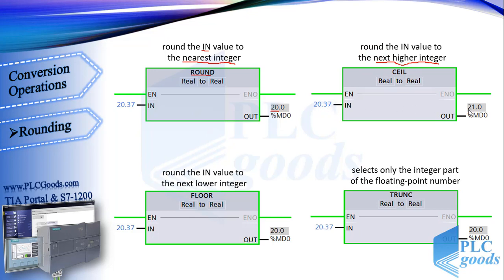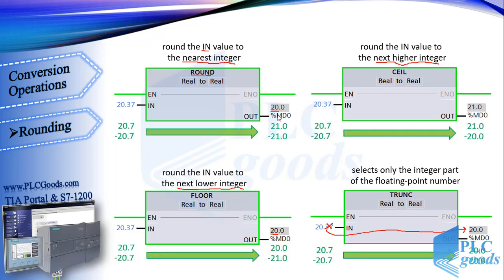So the next higher integer of 20.37 is 21. The Floor instruction rounds 20.37 to the next lower integer, which is 20. The last instruction selects only the integer part of the floating point number. Although some results are the same, these instructions differ in their details. Test these instructions with 20.7 and -20.72 and compare each result to learn the differences.